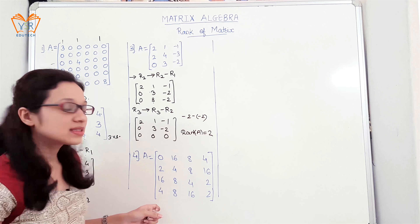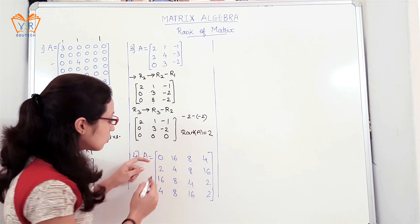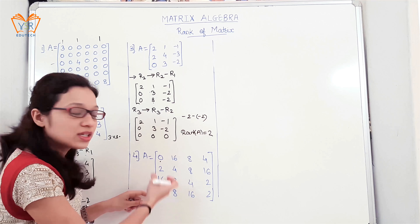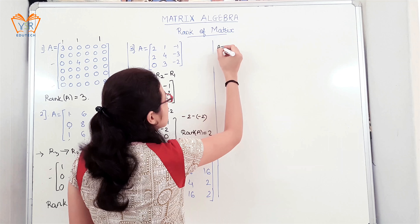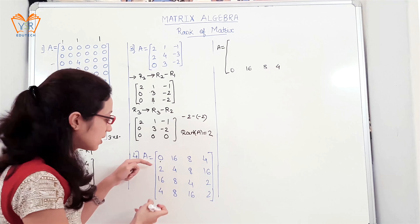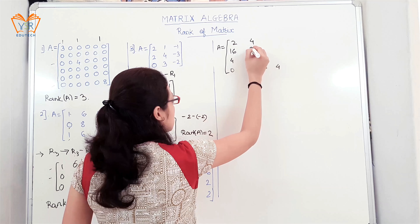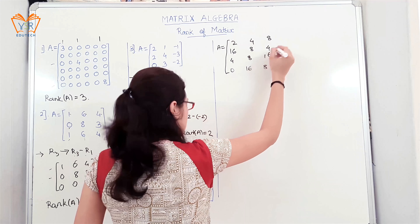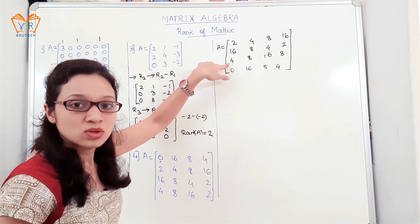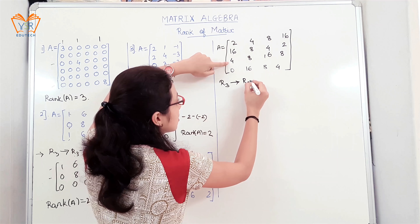For the next example, as mentioned previously, to find the rank of a matrix always try to convert the given matrix into upper triangular form. Here the first element of row 1 is equal to 0, so we will shift this row to the bottom and shift all the remaining rows upward. The resulting matrix has the rearranged rows, with the last row showing 2, 16, 4. To make the required element equal to 0, we apply R3 = R3 minus 2R1.